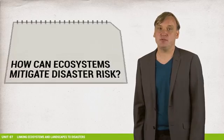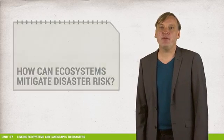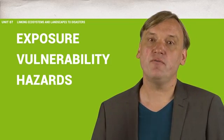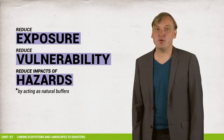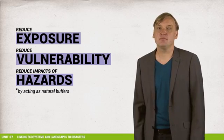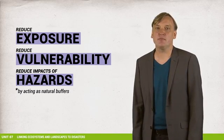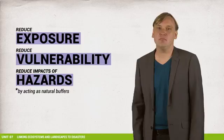Let's finally come to the last question of this unit: how can ecosystems mitigate disaster risk? As discussed briefly in the leadership track, EcoDRR is one of the few approaches that can reduce all three components of the disaster risk equation. If you answered exposure, vulnerability and hazards, then you got it right. We consider that ecosystems reduce exposure in certain cases, for example along coastlines where green belts act as natural buffers. Ecosystems also reduce vulnerability as they provide many ecosystem services for supporting livelihoods and human well-being. Lastly, healthy ecosystems can reduce the impact of hazards by acting as natural buffers.